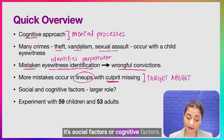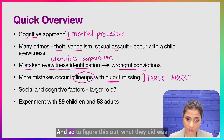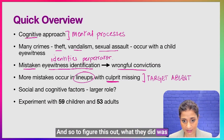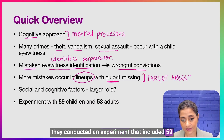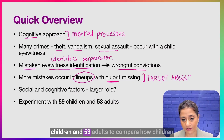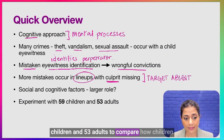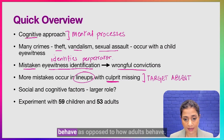Pozzuolo and her team wanted to figure out particularly whether it's social factors or cognitive factors driving these choices. To do this, they conducted an experiment that included 59 children and 53 adults to compare how children behave as opposed to how adults behave.